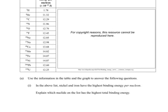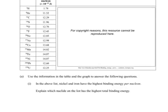Use the information in the table and the graph to answer the following questions. In the above list, nickel and iron have the highest binding energy per nucleon. Explain which nuclide on the list has the highest total binding energy.